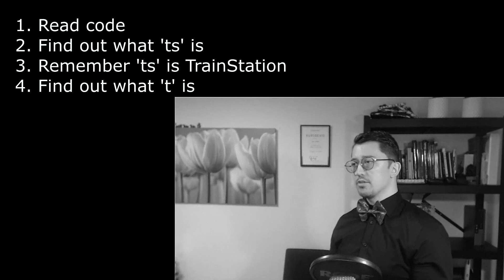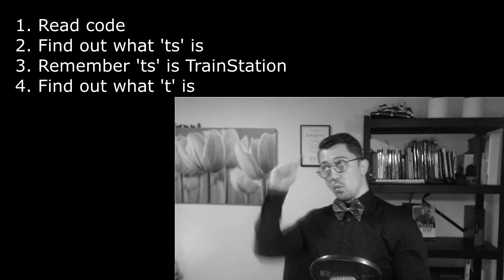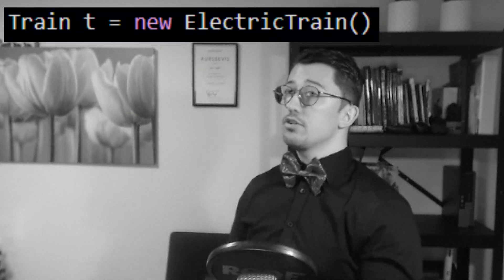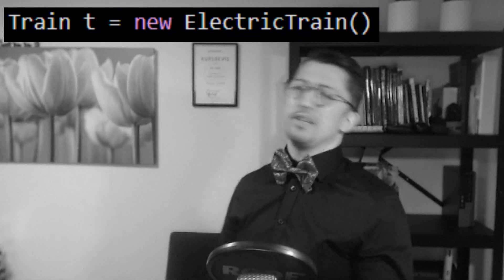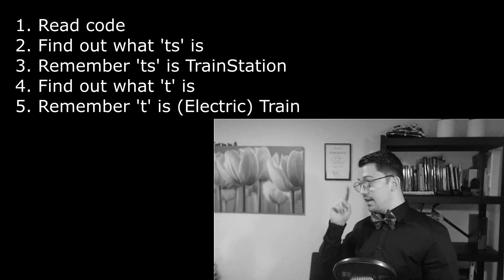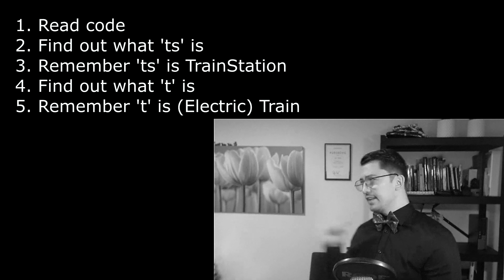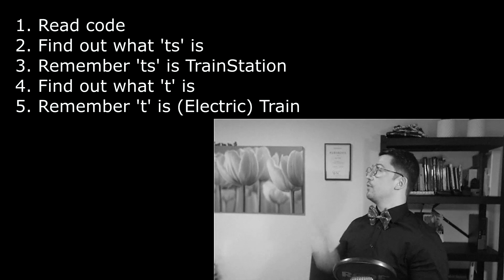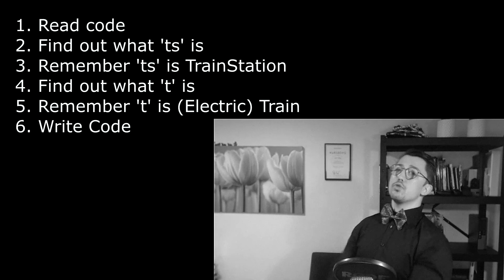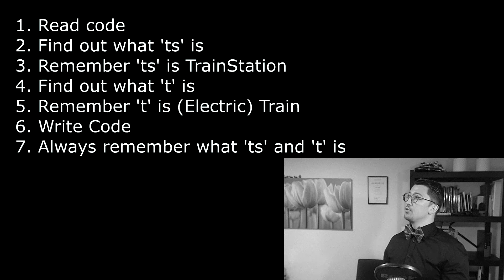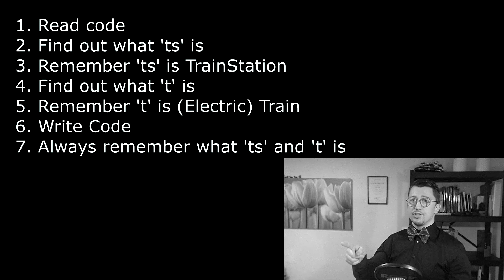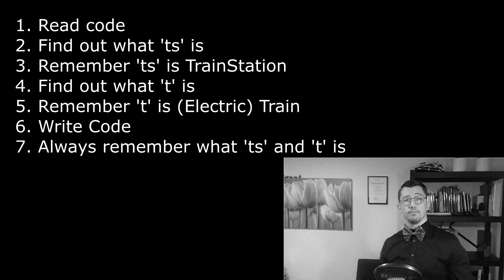Step four: we still have T to think about, so we have to find out what T is. T is electric train — not just train, but electric train. We might rename this to ET, but what do we know? So now I have to remember that T is an electric train. Then you start working, which is step six — you write the code, do the thinking, maybe run the code. Step seven: throughout all of this, you always have to remember that TS is train station and T is electric train. That's the simplified workflow.